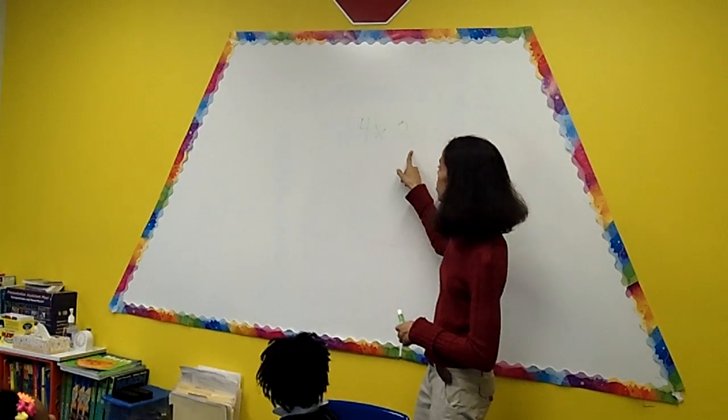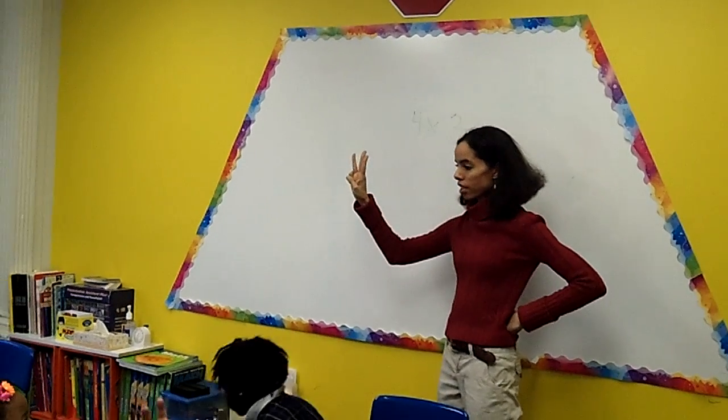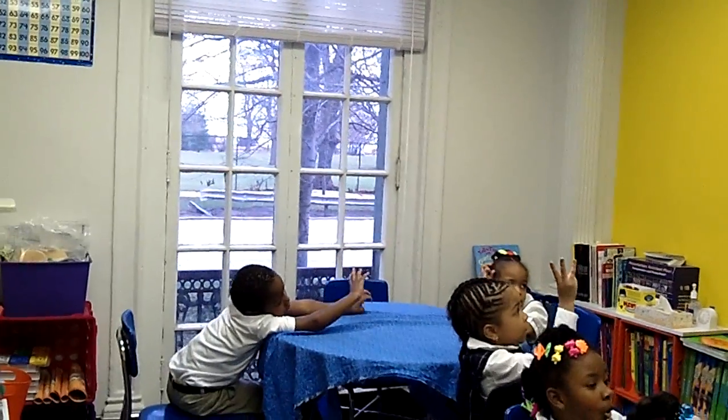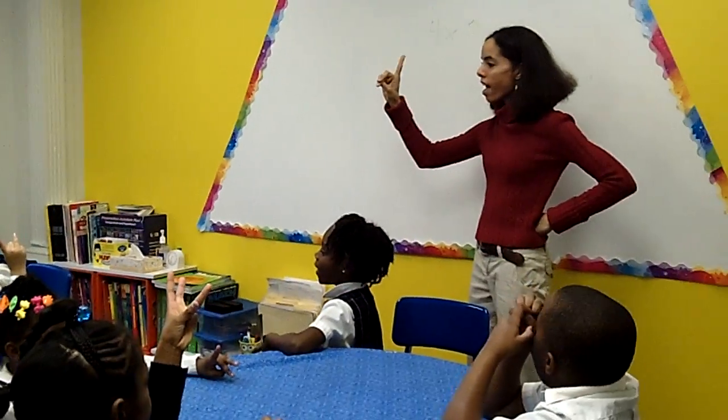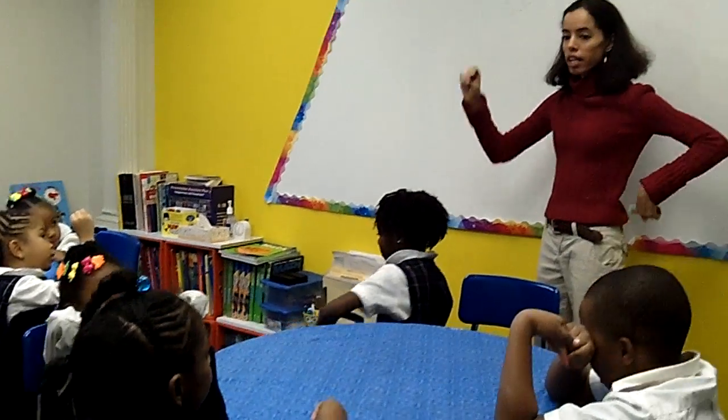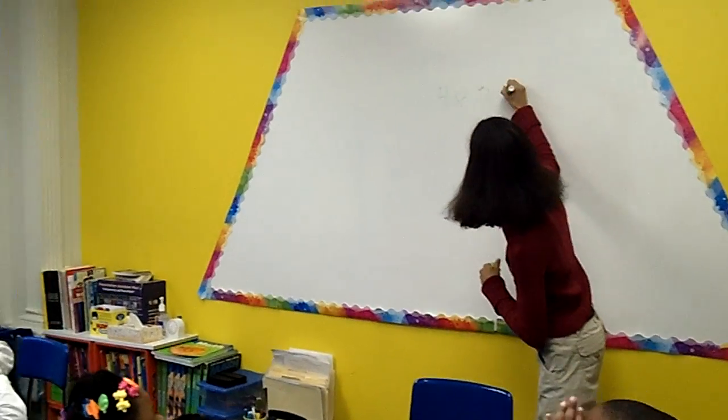Three times. So let's hold up three fingers. Three times. We're going to count by fours. Four, eight, twelve. Twelve. So four times three is what class? Twelve. Twelve. Very good.